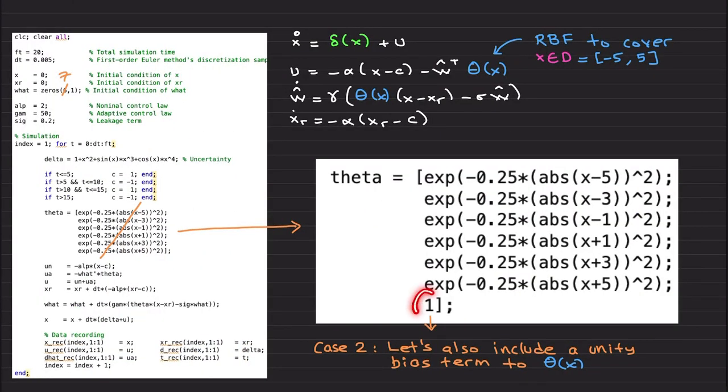Case two, I am now going to add a bias term here. So how does the code change? First of all, w now has one more element, theta has one more element, so this is like 7 by 1. This becomes 1 by 7, so you need to update its initial condition.